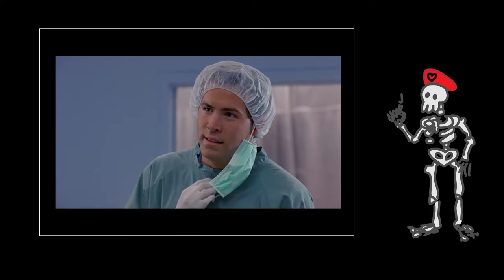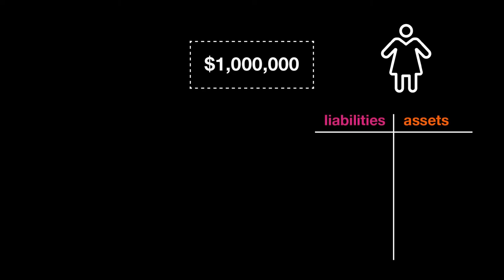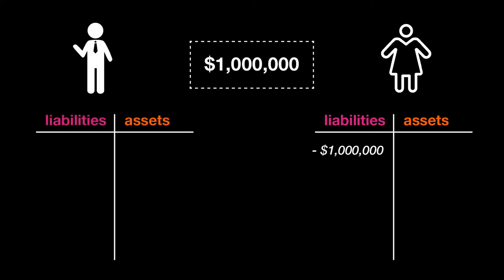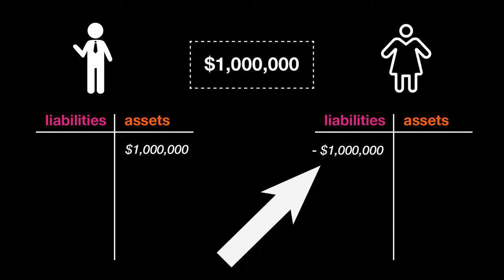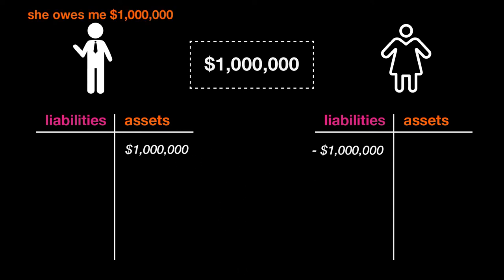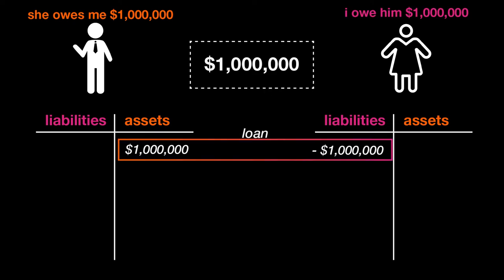But why? Well, let's consider a small loan of a million dollars. The person who takes out the loan has a liability of one million dollars — a liability is when you owe someone something. The person who gave them the loan has an asset worth one million dollars; they are owed one million dollars by whoever took out the loan. Every asset is someone else's liability. Every time someone is owed money, someone else owes money. Assets and liabilities always exist as a pair.